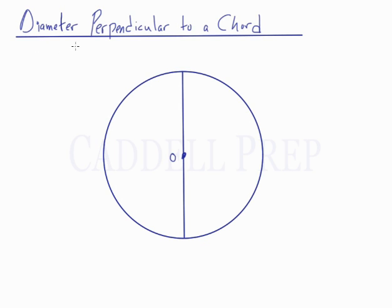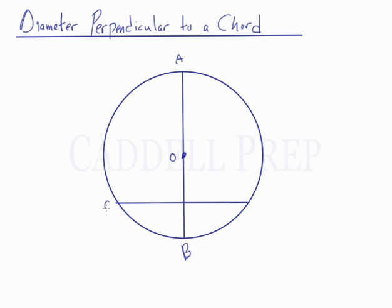In this lesson, we'll take a look at a diameter drawn perpendicular to a chord. Here we have circle O, and there's a diameter drawn. Now let's draw a chord so that it's perpendicular to this diameter. We have diameter AB and chord CD, and they intersect at point P, perpendicular at point P.